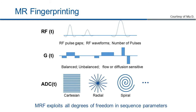It simulates expected signals using Bloch simulations or extended phase graph, then uses a pattern recognition algorithm to quantify multiple tissue properties simultaneously. Because of the pattern recognition algorithm used in the framework, MRF allows exploration of all degrees of freedom in sequence design. In this study, we would like to design an MRF sequence with extremely low RF power deposition to quantify T1 and T2 values.